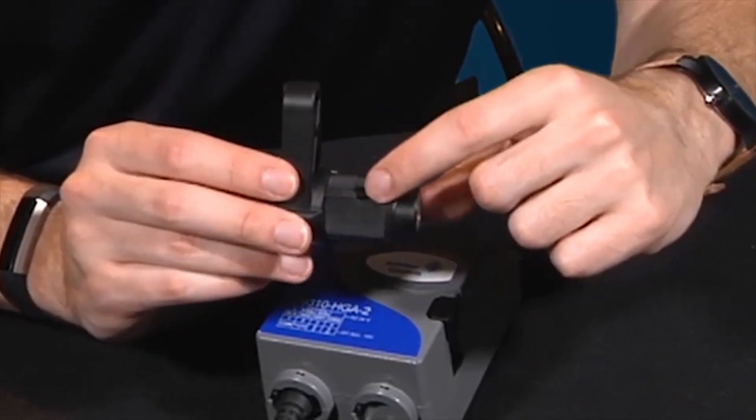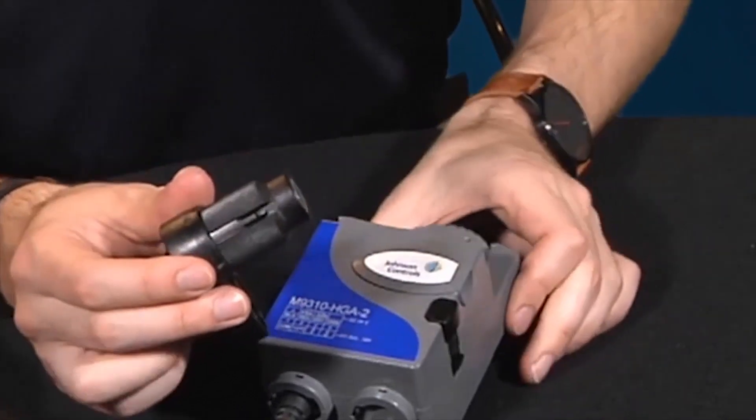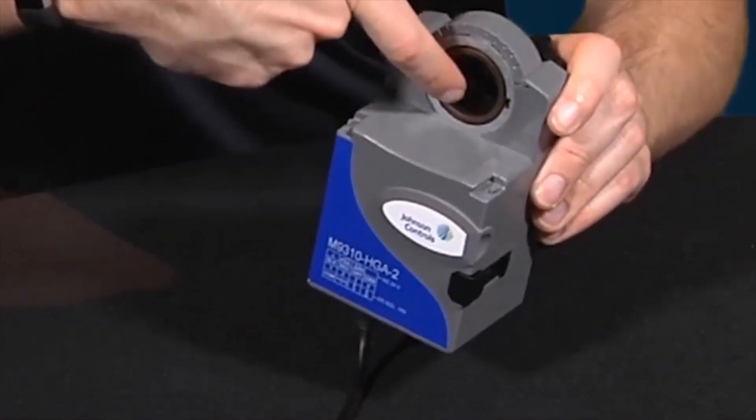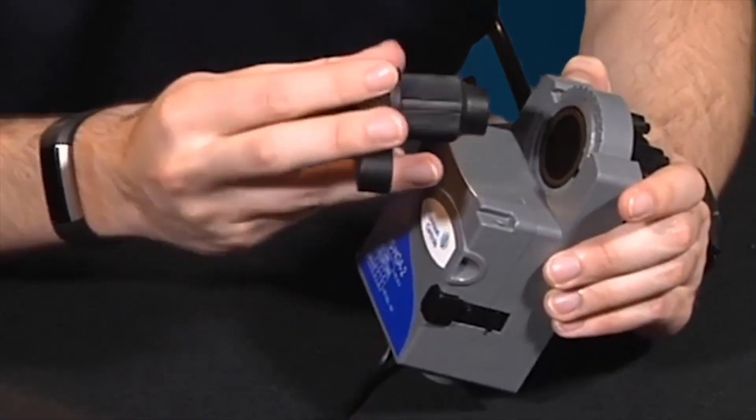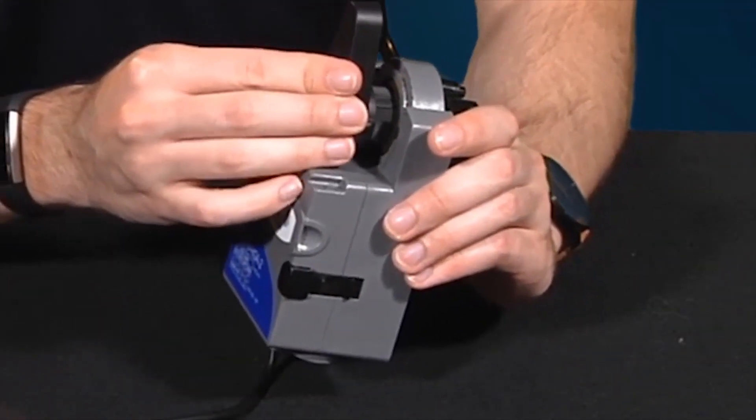Next, we'll insert the new pointer lever. In order to align the pointer correctly, you'll want to line up the snaps on the pointer shaft with the flats on the inside of the actuator. We'll align the new lever with the flats and insert from above.